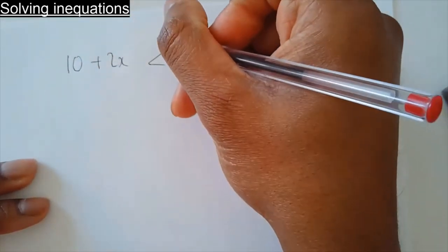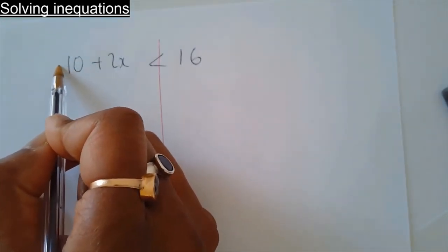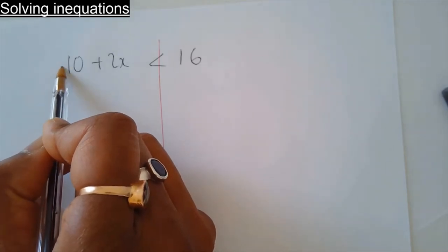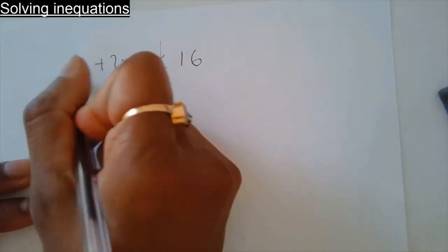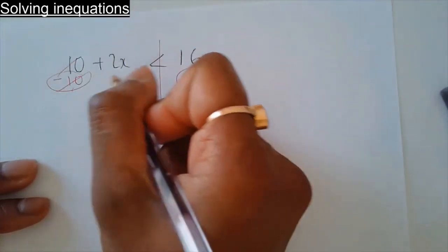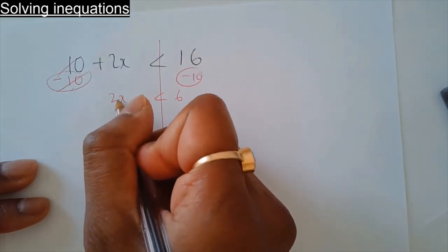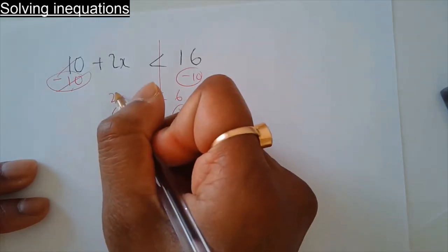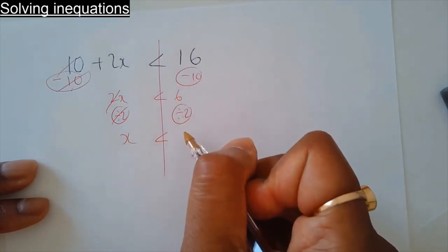To work out x, first of all get rid of — well, this is a positive number because there's no negative symbol in front of it, so assume it's positive. To get rid of positive 10, take away 10 — do the same on the other side. 10 take away 10, they cancel out, you're left with positive 2x. 16 take away 10 is 6. To get rid of times by 2, divide by 2 — do the same on the other side. 2 divide by 2 they cancel out, you're left with x. 6 divided by 2 is 3.